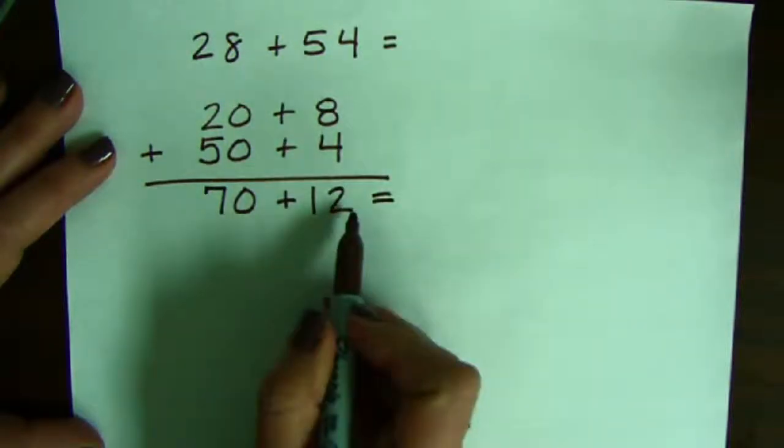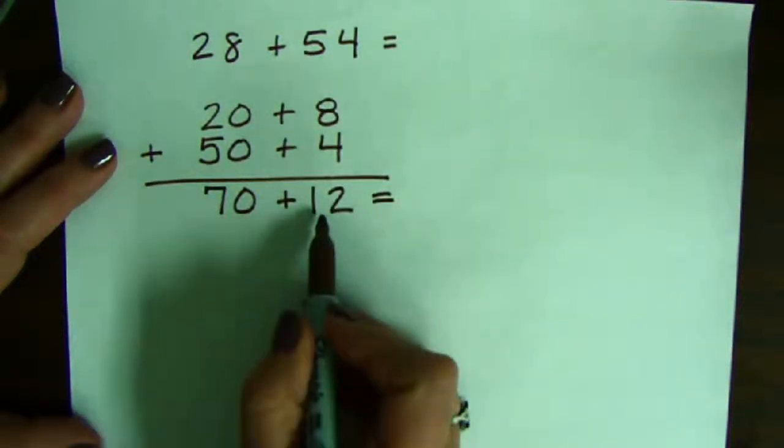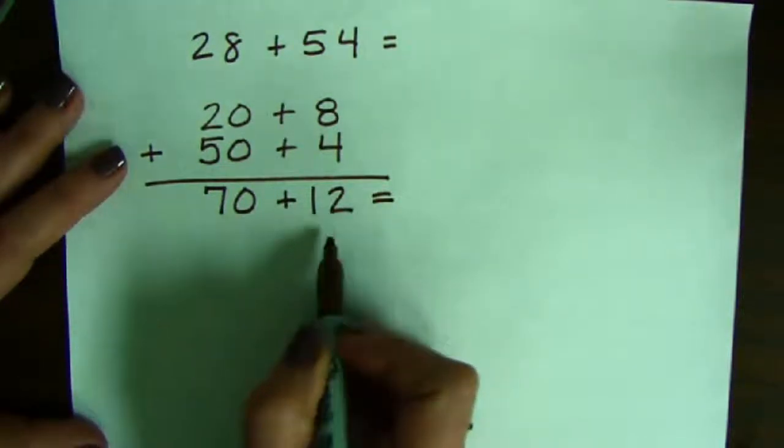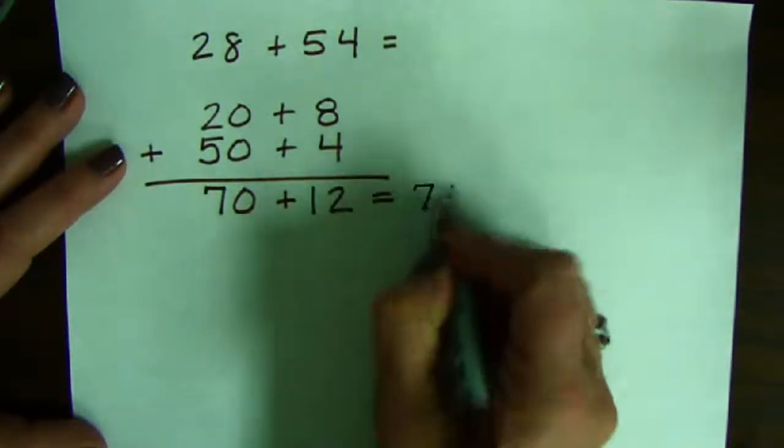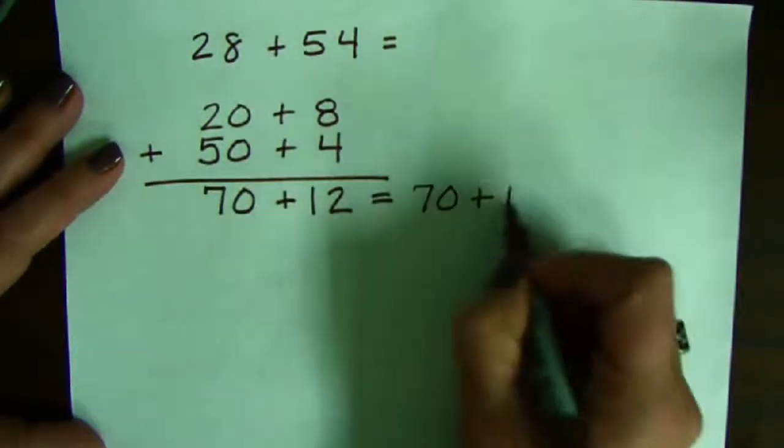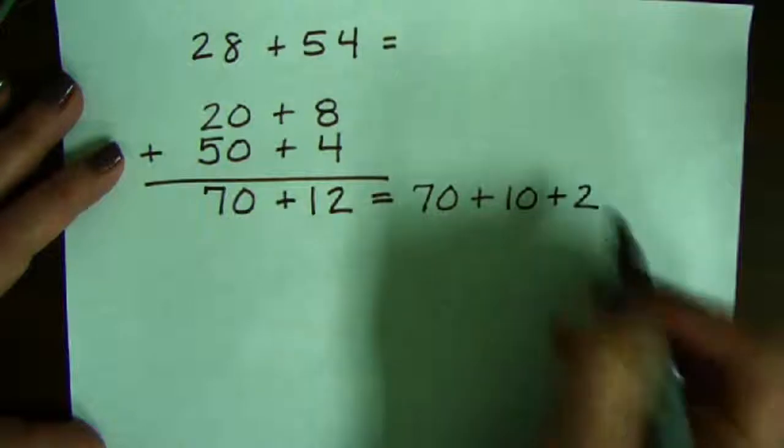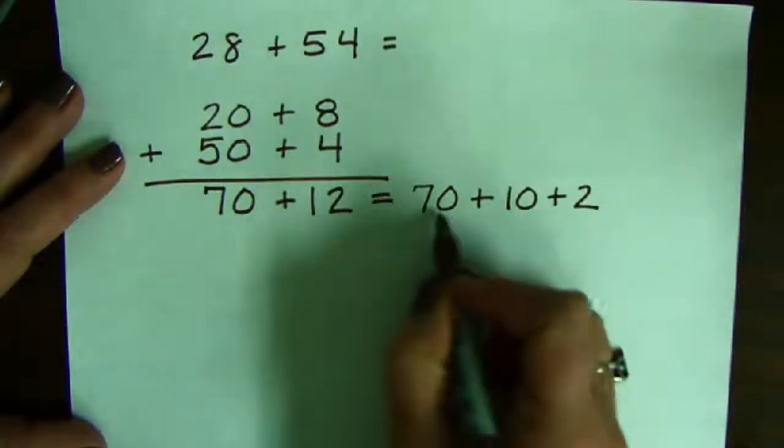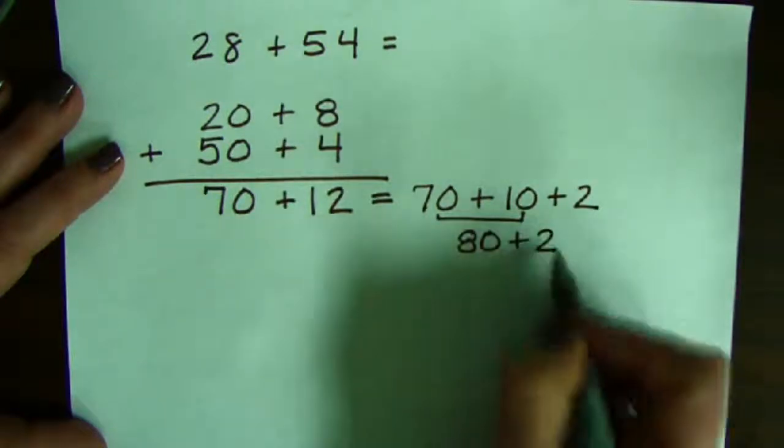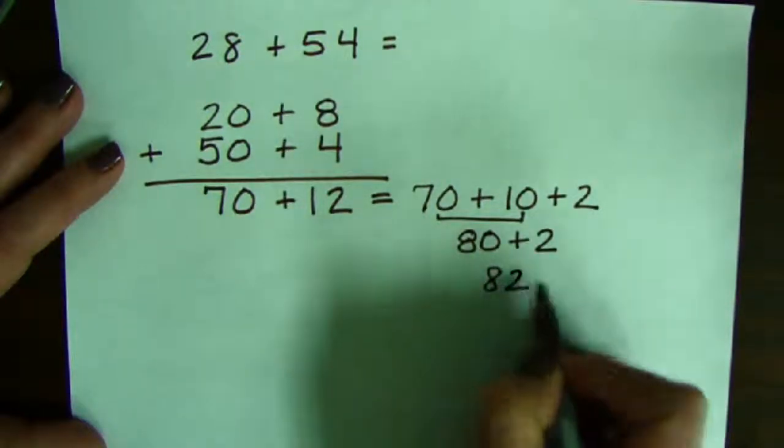Students who are strong in mental math and adding 10s with some more could answer this question quickly. If not, you may need to break this 12 up by place value into 10 plus 2. From there, 70 plus 10 becomes 80, plus 2, our final answer is 82.